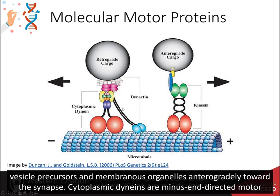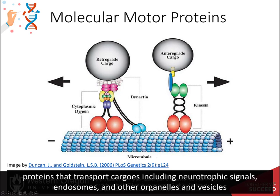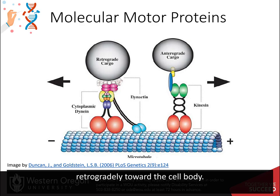Cytoplasmic dyneins are minus end-directed motor proteins that transport cargoes including neurotrophic signals, endosomes, and other organelles and vesicles, retrogradely towards the cell body.